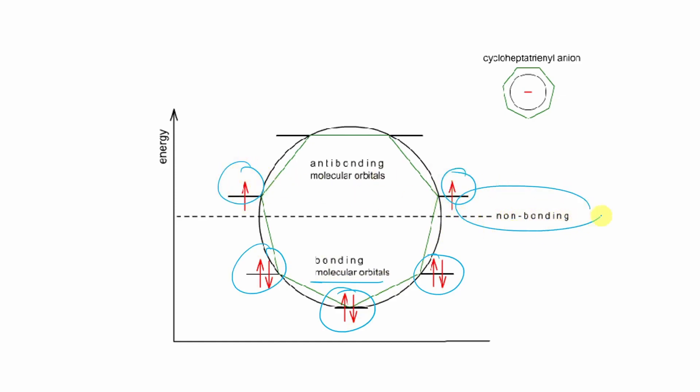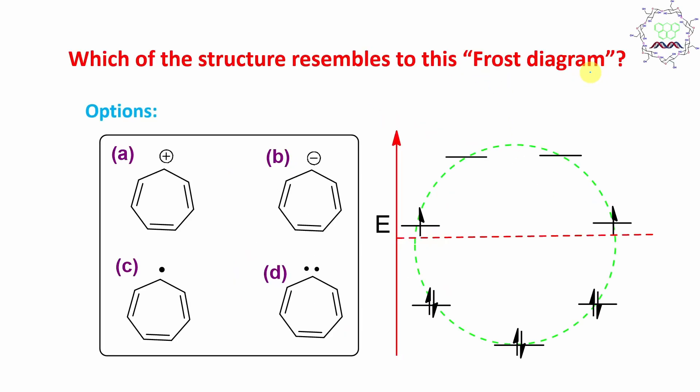2 are actually anti-bonding. And p orbital energy is also considered as non-bonding. This is actually cycloheptatriene anion. So answer of today's question is option B.